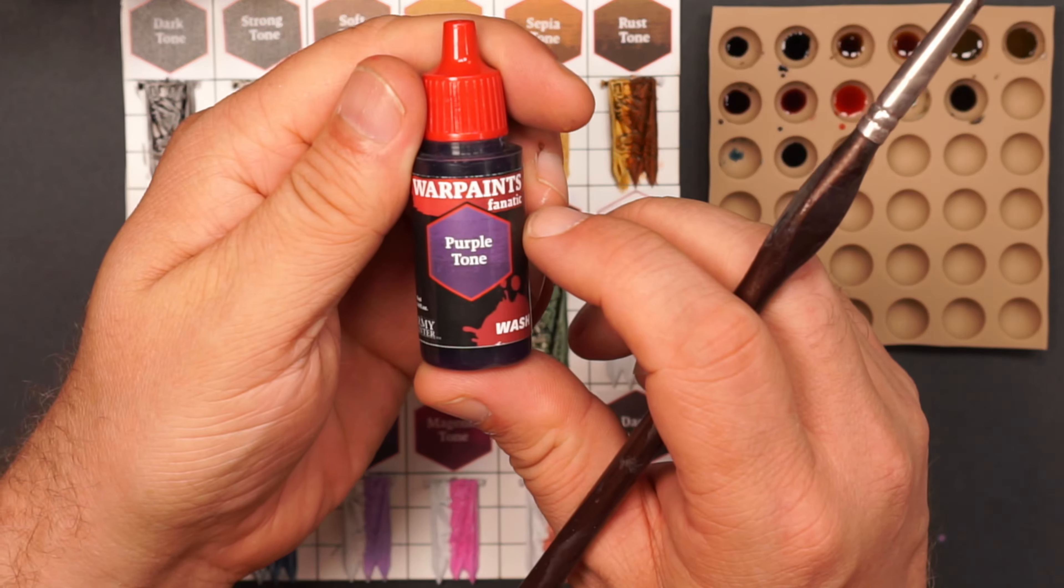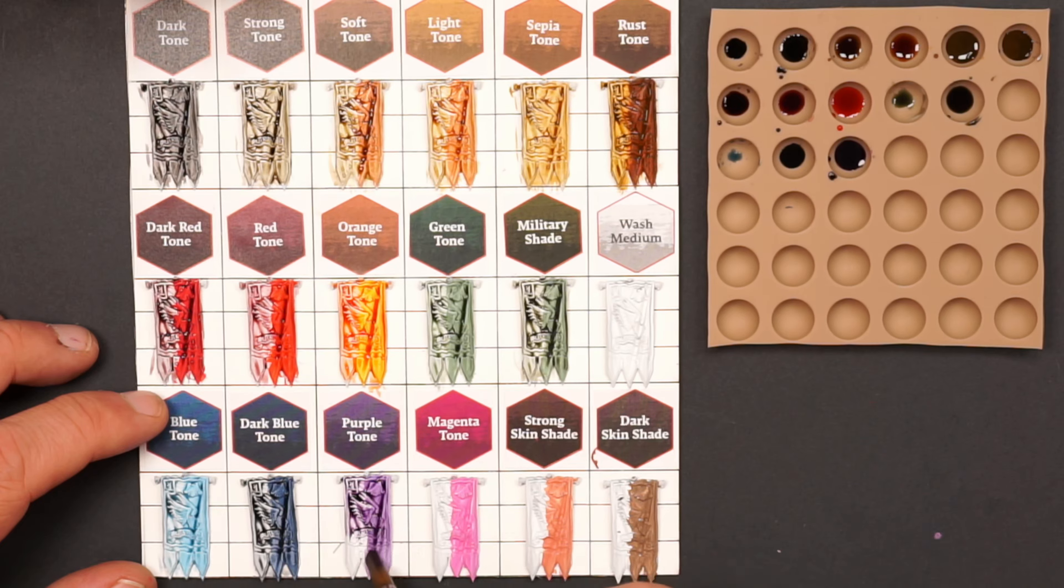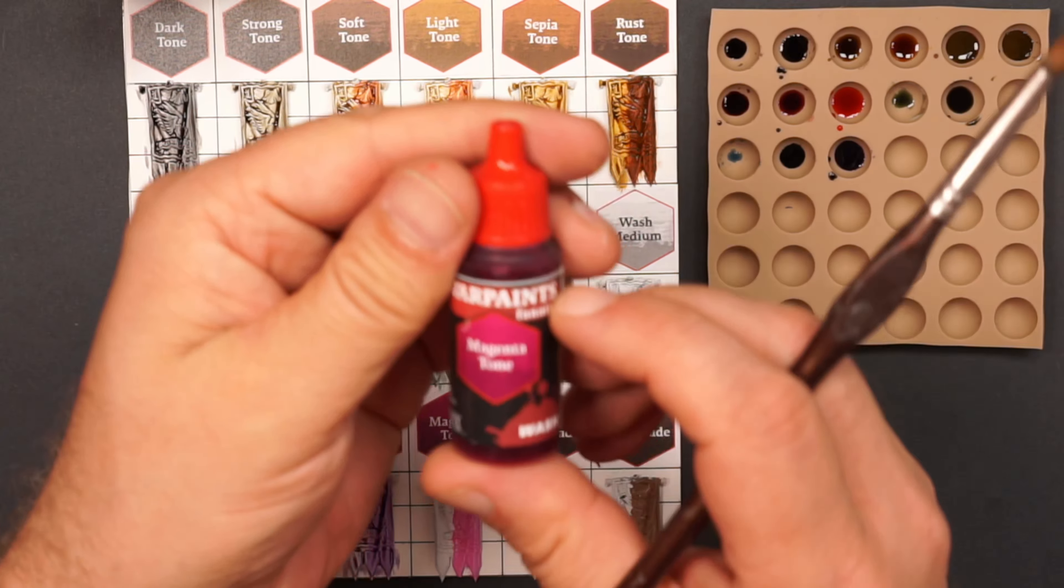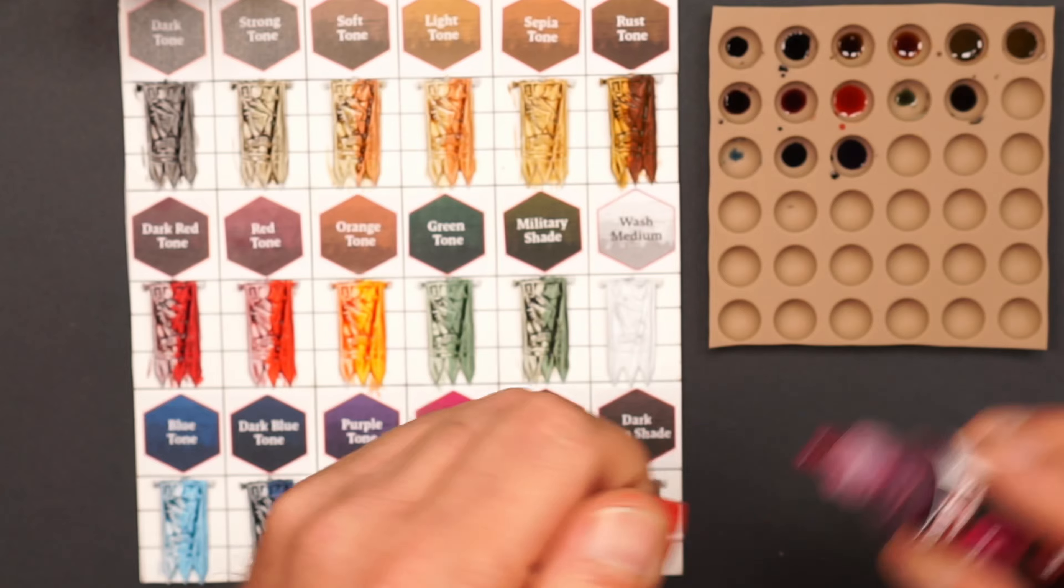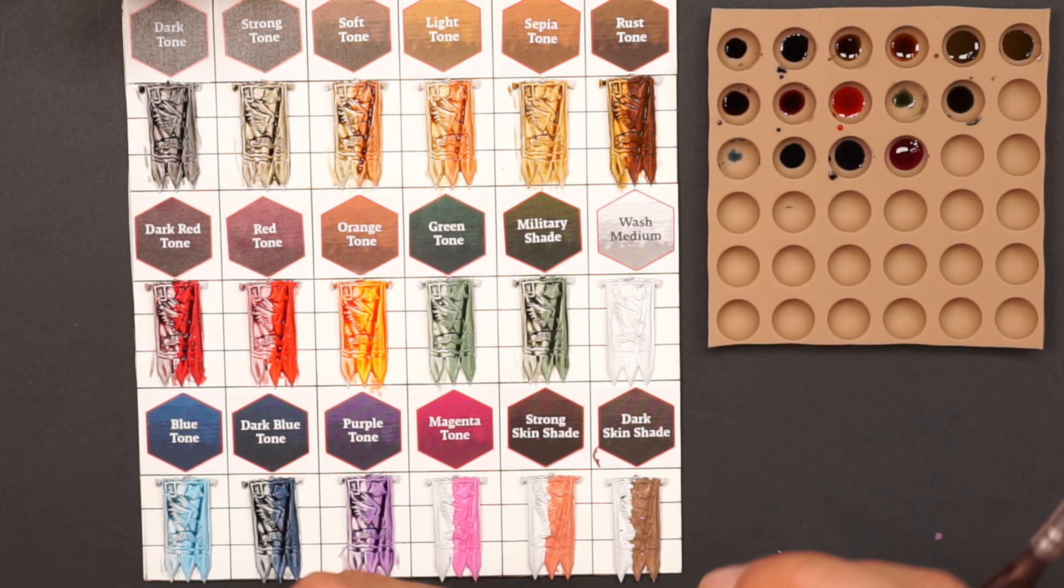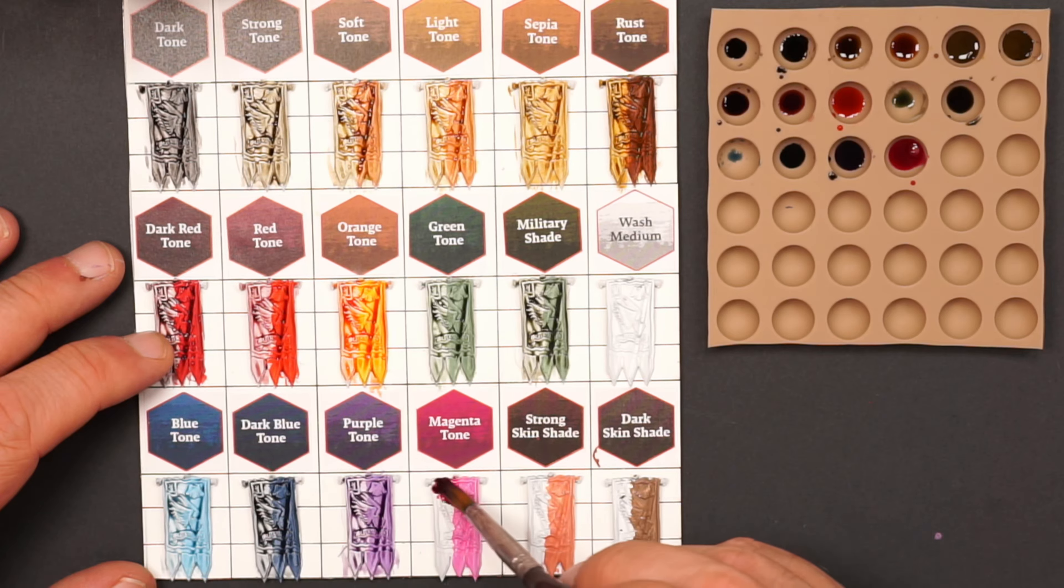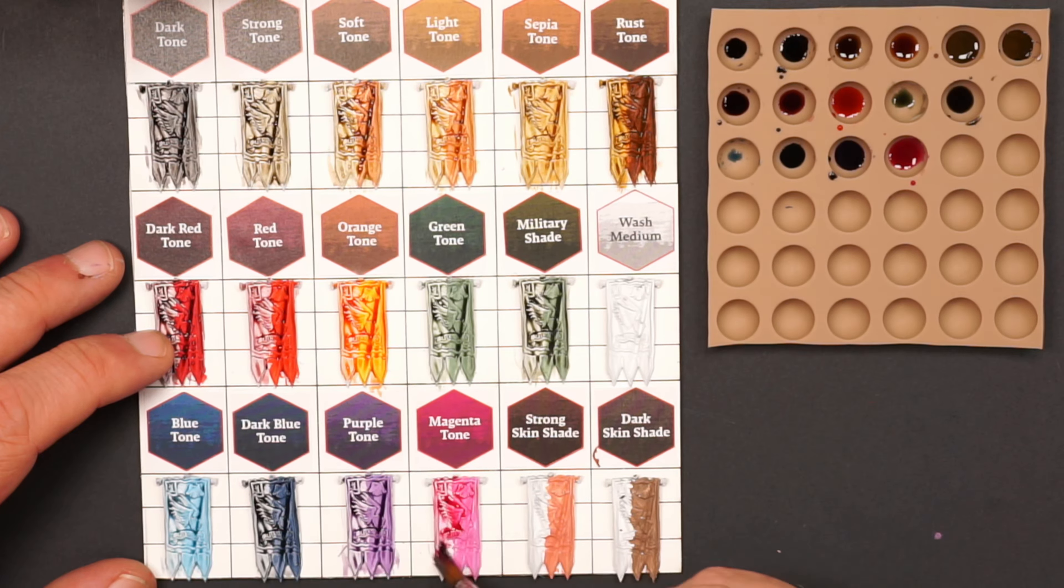The purple tone is also one of the old washes and there's no changes to that. And another new color, the magenta tone. I think with this color it completes the full palette for all the washes. We have tones in the full spectrum of all the colors that will accompany all the acrylic paints.